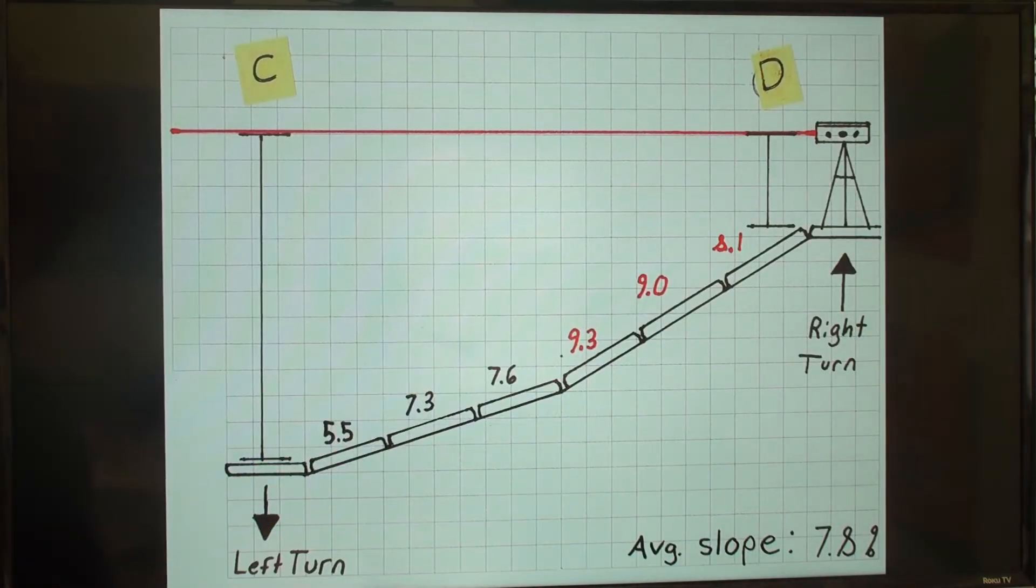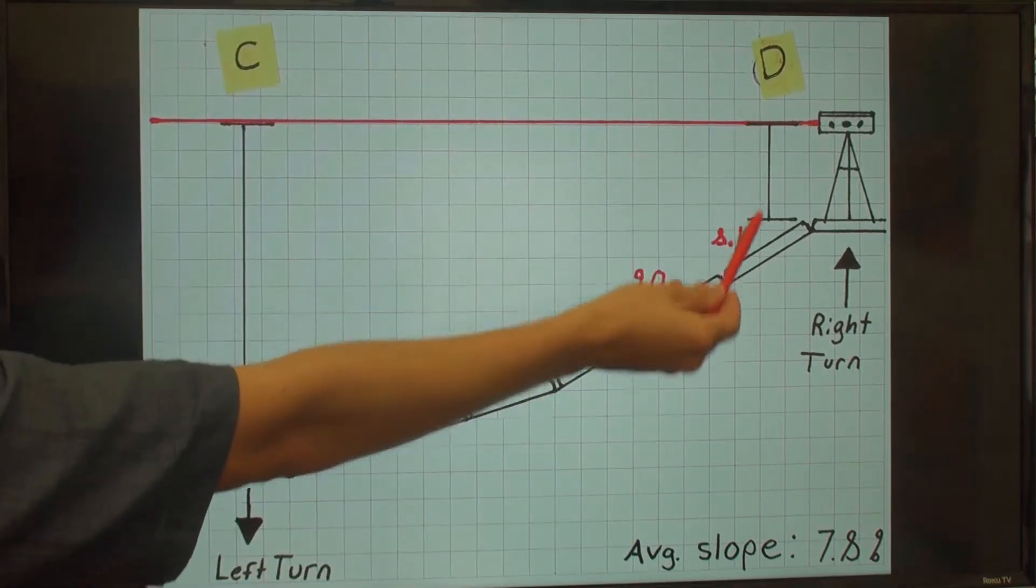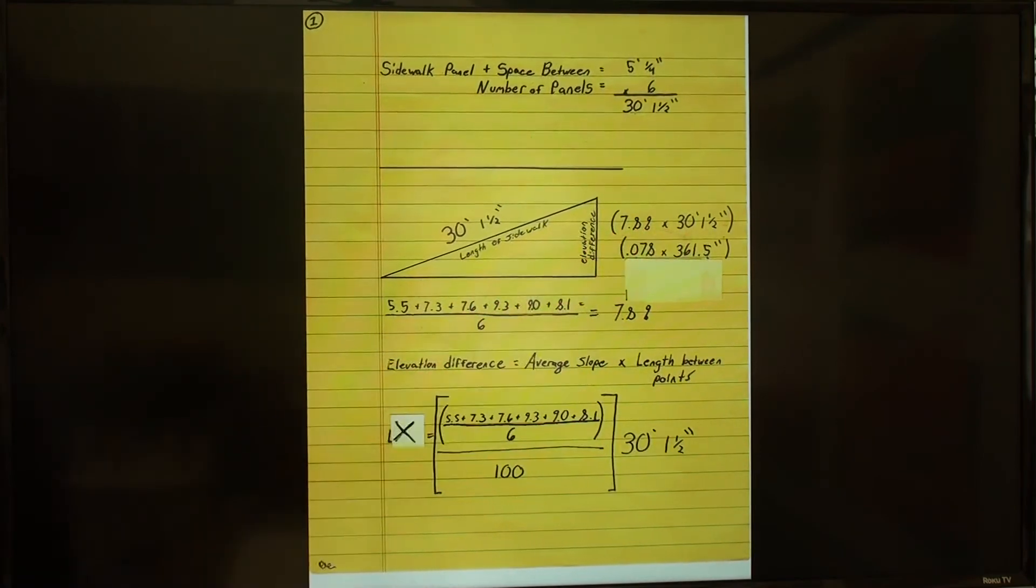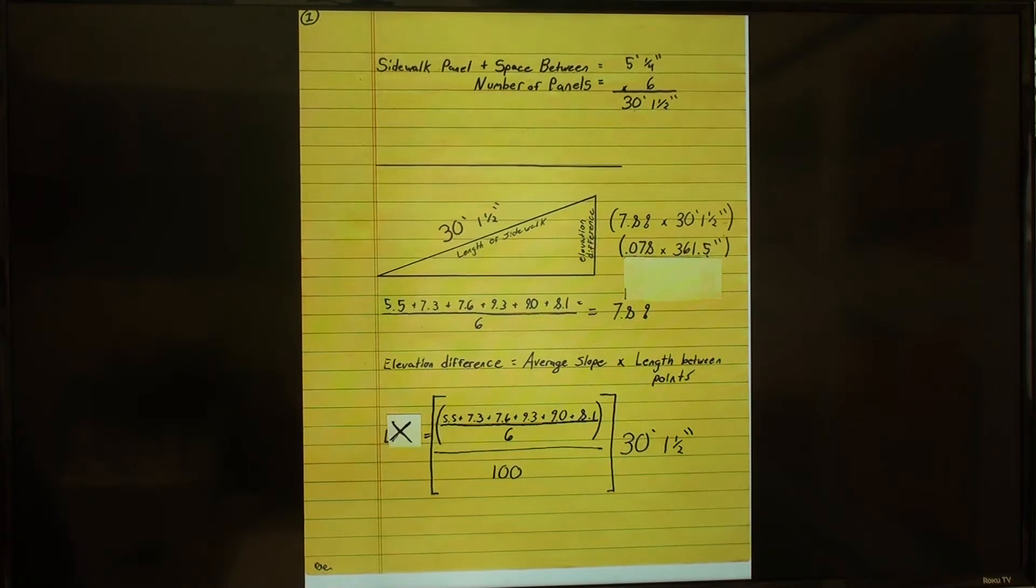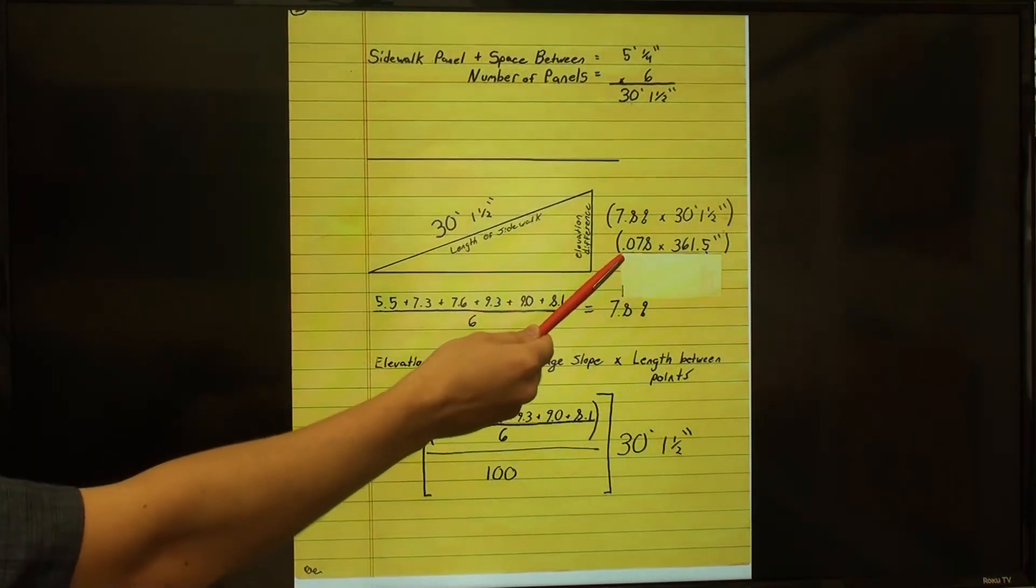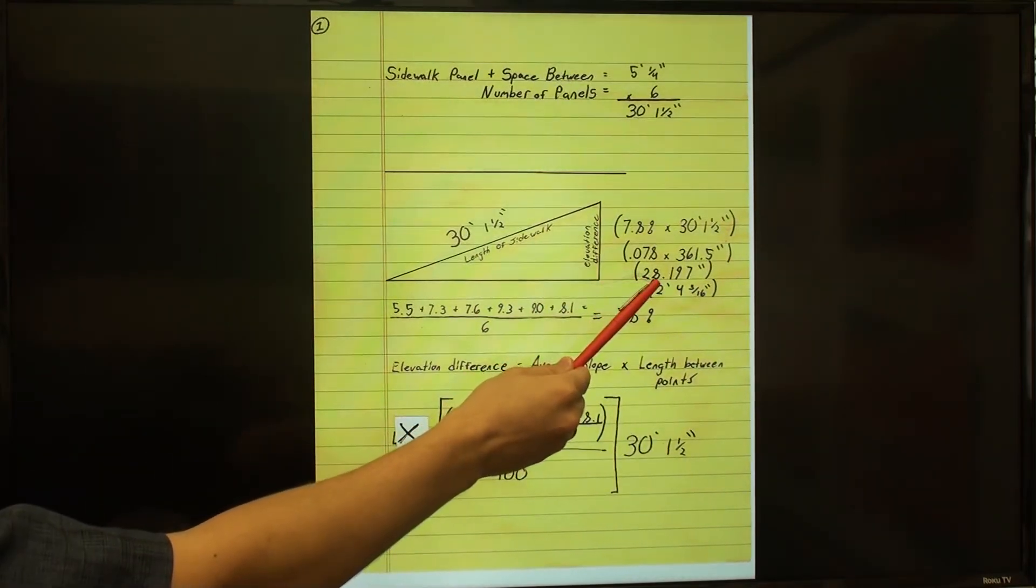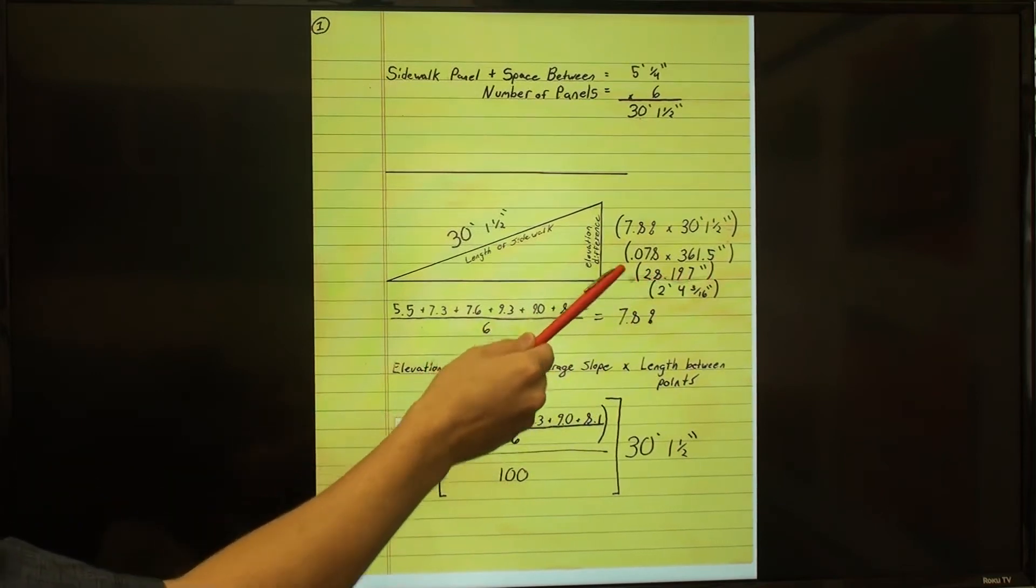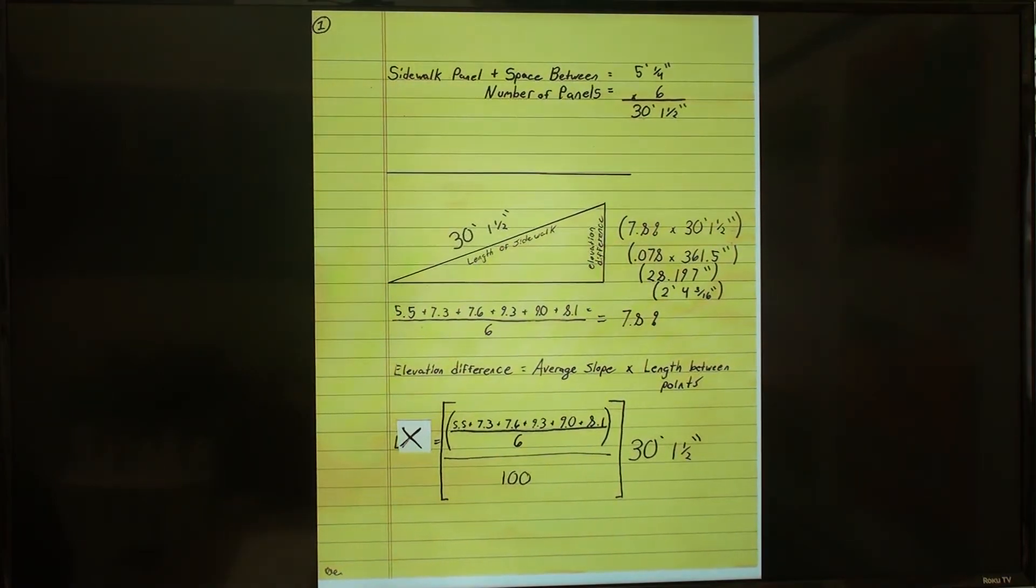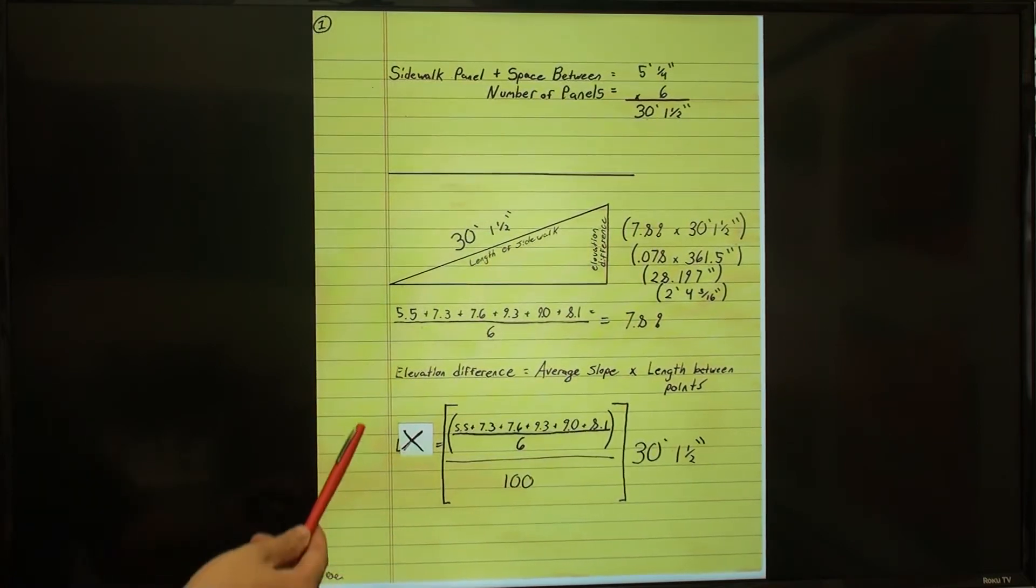For example, if our measurements are correct, the difference between the values of measurement C and measurement D should be equal to 7.8% of the length of our sidewalk, which we measured to be 30 feet 1.5 inches. I've simplified the measurements to be only in inches here, and turned the percent into a decimal. Using the laser level, we have measured that our elevation difference, that's C minus D, equals 2 feet 4.25 inches. And by doing the math, we determined that the elevation difference is 2 feet 4.75 inches. That is plenty close enough for the scope of work we are doing here.